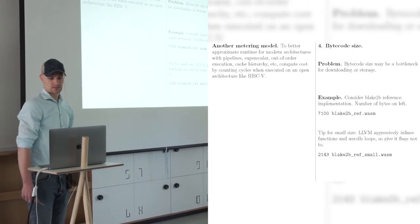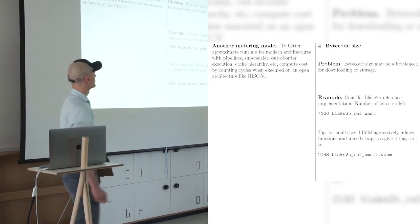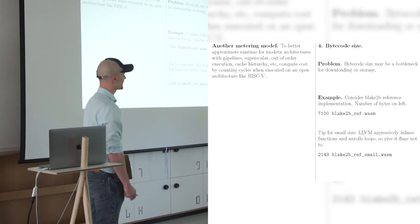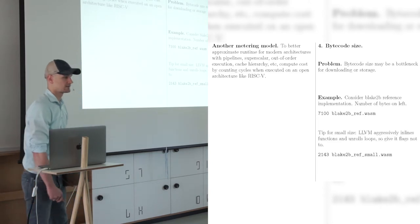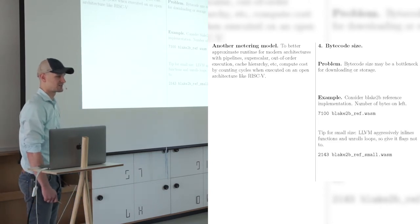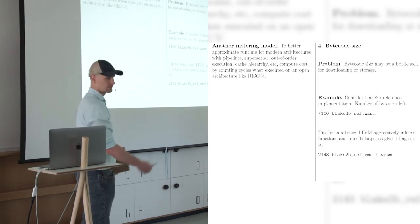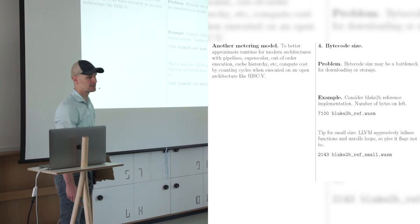Okay, bytecode size. People have to, it might be a bottleneck for downloading storage. Small bytecode size is better to have. Frederick said that there's a 10x, but I think that's gonna be fixed because Alex, check out Alex's stuff because he's getting really small binary. Now, but for example, as a case study, this Blake 2B reference implementation, you can find the reference implementation online. And I compiled it to WebAssembly. Number of bytes is on the left. So 7,100 bytes, just I just compiled it.